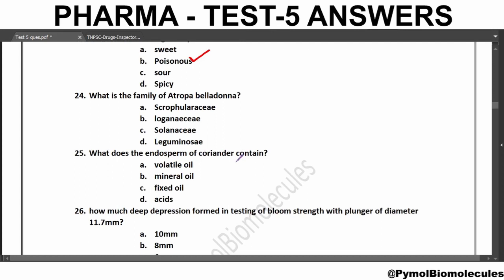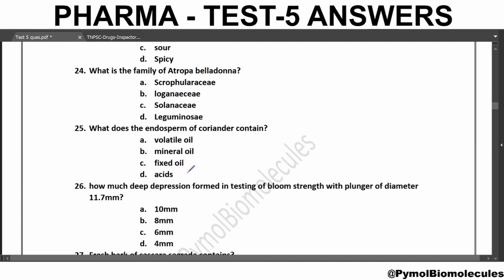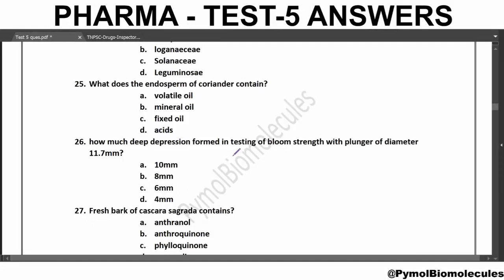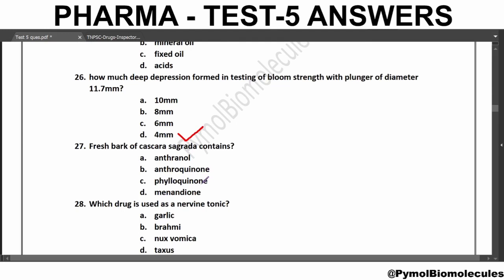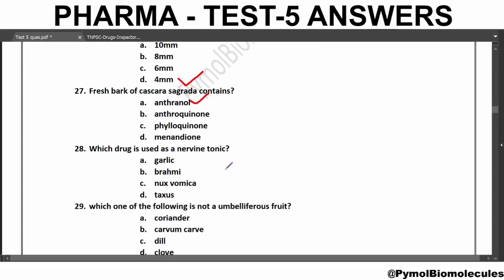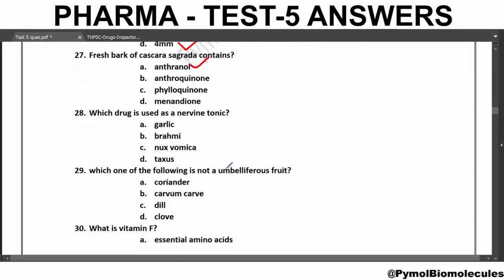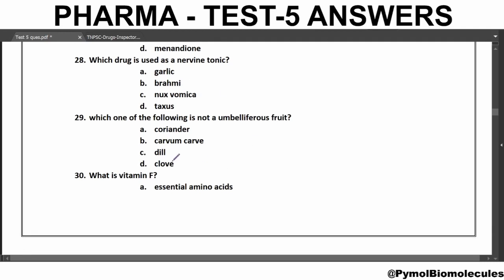The endosperm of Coriander contains Fixed Oil. Volatile oil is present in the Vitae. How much deep depression is formed in testing of Bloom strength with a plunger of diameter 11.7 mm? The depression formed is 4 mm. Fresh bark of Cascara Sagrada contains Anthranol; after one year, the Anthranol gets oxidized to Anthraquinone. Which drug is used as a nervine tonic? The answer is Brahmi. Which one of the following is not an umbilliferous fruit? The answer is Clove.